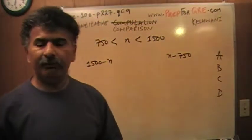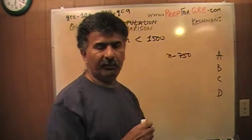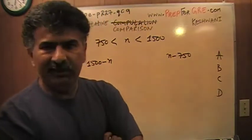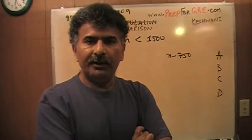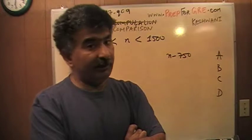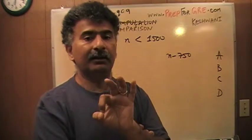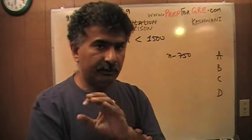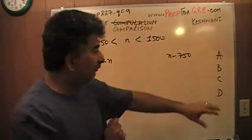What is it that one claims when one picks A for the answer in these questions? When you pick A for the answer, what one is claiming is that the quantity in column A is always greater. Not sometimes, not in this particular instance, but always greater. That's the claim you're making. And if that claim turns out to be wrong, then of course, then the answer is wrong. What you're claiming when you pick B for the answer is that the quantity in column B is always greater.